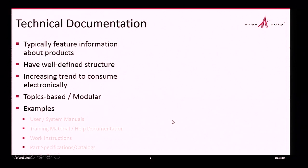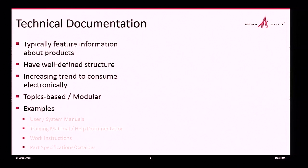Technical documentation typically covers features, information about products or processes — things managed within PLM. It has a well-defined structure. Many people still like a printed copy, but there is an increasing trend to consume this information electronically. This information is topic-based and modular — we're talking about documents that aggregate context-insensitive content that can evolve on its own.